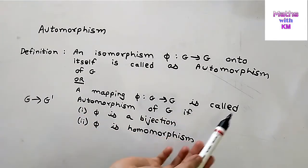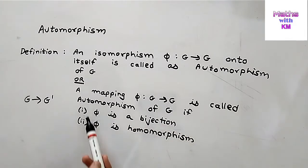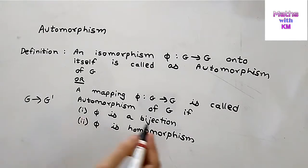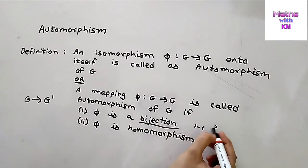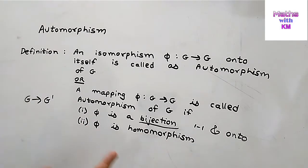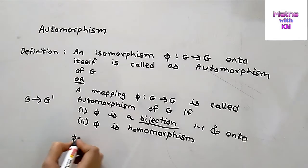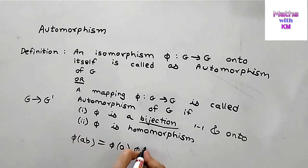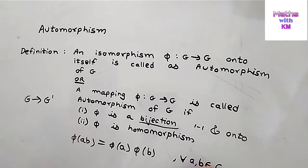Another definition: a mapping phi from g to g is called an automorphism of g if these two conditions are satisfied. First condition is phi is a bijection — meaning one-to-one and onto. Second condition is phi is a homomorphism, meaning phi of a·b equals phi of a into phi of b, for all a, b belonging to g.